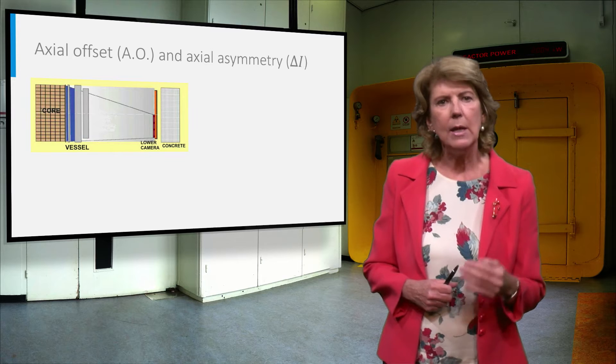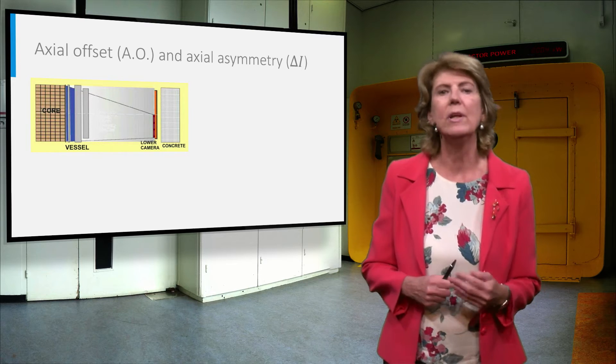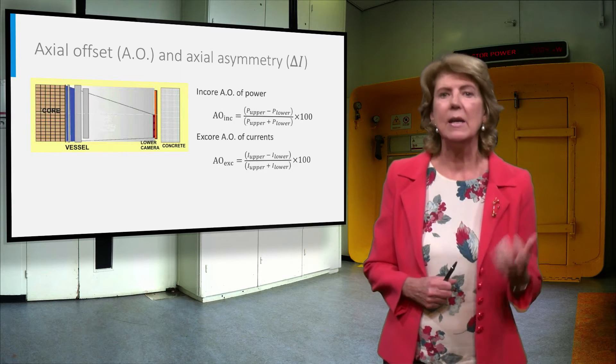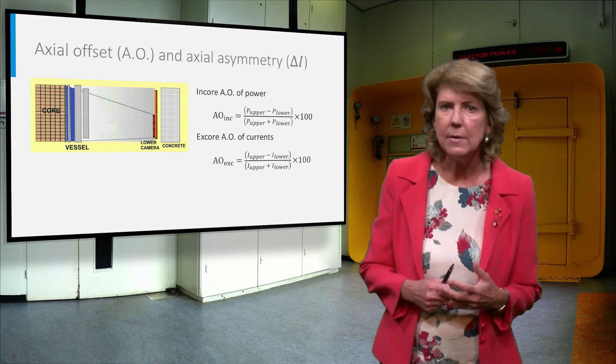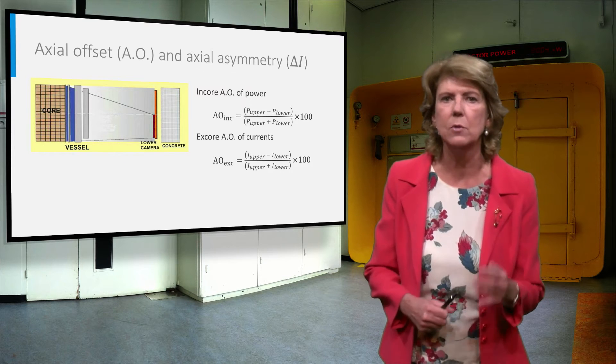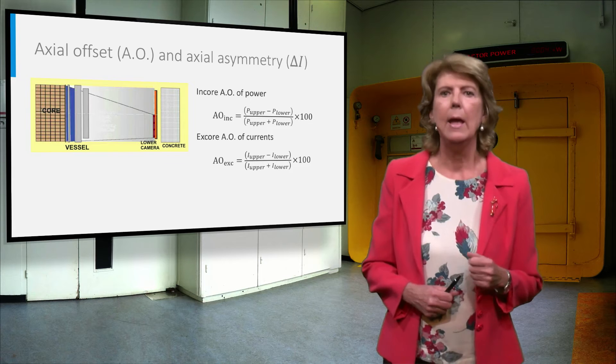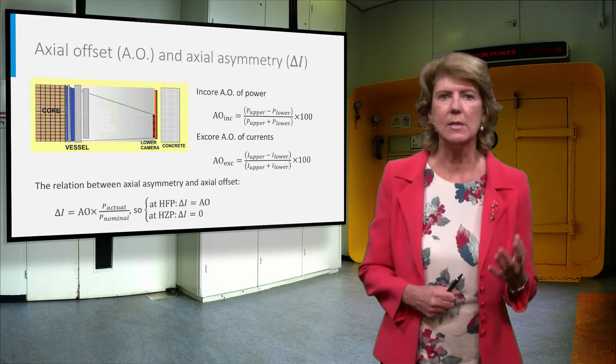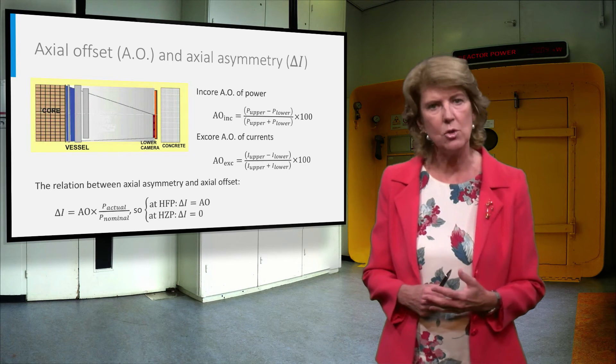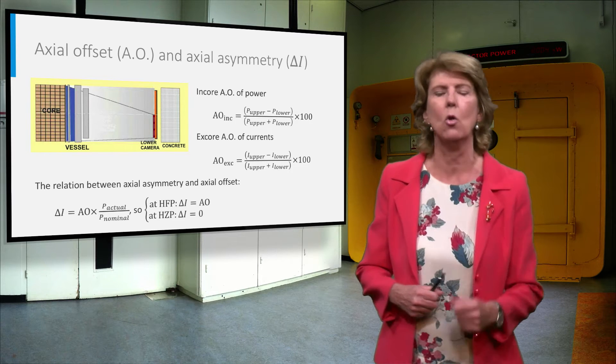The axial offset and the axial asymmetry are two related parameters. The axial offset is the relative difference in power between the upper and lower half of the core. The axial asymmetry is defined as the axial offset multiplied by the ratio of actual and nominal core power.